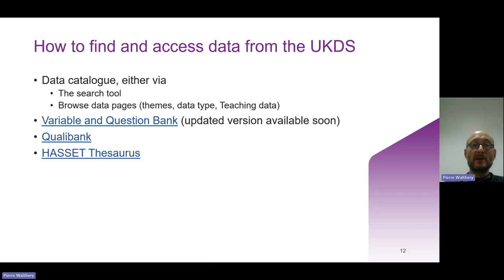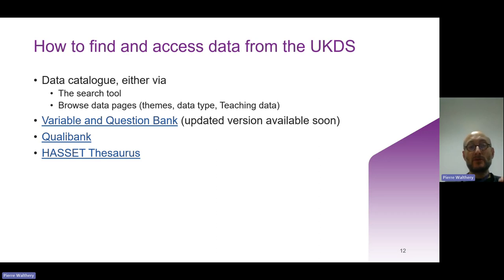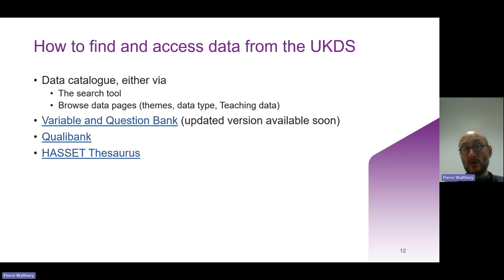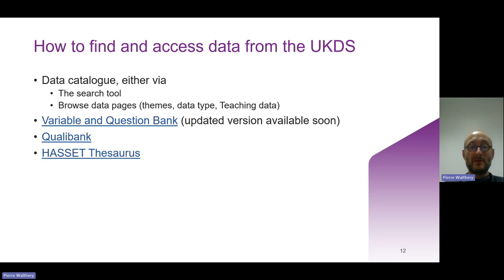How do you find and access data from the UKDS? There are basically three ways. Either via the data catalog with a search tool I'll show you, a variable and question bank in which you can search variables and questions across most of our surveys, the same for our qualitative data resources, and the UKDS Thesaurus which is a keyword search of keywords present in all our quantitative studies.